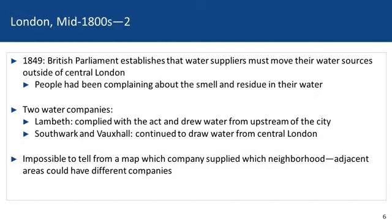Also in London at this time, the British Parliament had established that water suppliers must move their water sources outside of central London. This was not because of a recognition of the importance of clean drinking water, but instead because people had been complaining about the smell as well as residue in their water. There were two prominent water companies at the time: the Lambeth Company, which complied with the act and began to draw water from upstream of the city, and the Southwark and Vauxhall Company, which continued to draw water from central London. It was impossible to tell from a map which company supplied which neighborhood, such that adjacent areas could actually be supplied by different companies.